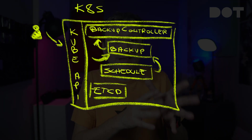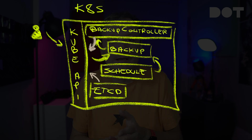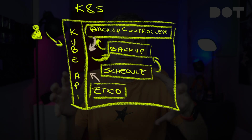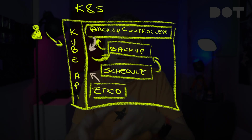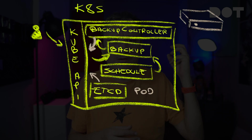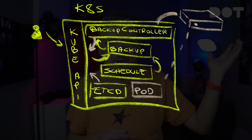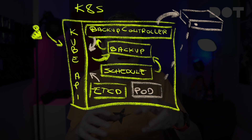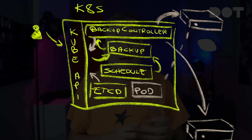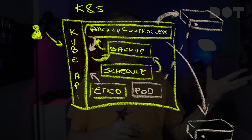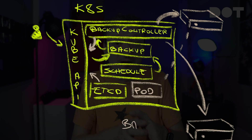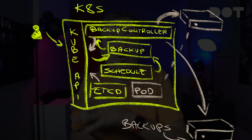When a backup resource is created, the controller creates a snapshot of etcd, which is Kubernetes' internal database — that's where the current state of all the resources in the cluster is stored. It also creates snapshots of all the data in volumes, logs, and a few other things. All those snapshots are then uploaded to an external storage. In the case of AWS that would be an S3 bucket; in the case of Google Cloud it would be a Cloud Storage bucket, and so on and so forth.